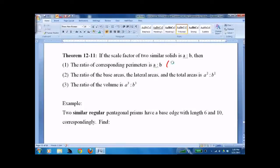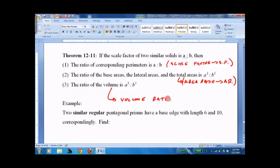So you've derived them yourself, or you can just flip the page over. It's all written down here. Ratio of corresponding perimeters, scale factor, what I call SF. Ratio of the base areas, lateral or total areas, what I call the area ratio, AR. And then what I call the volume ratio, VR.